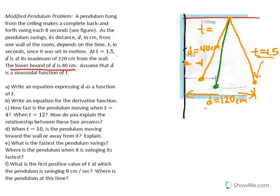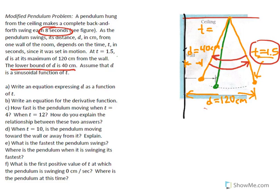How long does it take for the pendulum to make one complete back-and-forth swing? A back-and-forth swing goes from 120 centimeters to 40 centimeters and back to 120 centimeters. It takes 8 seconds for a complete back-and-forth swing, so the period of our sinusoidal function will be 8 seconds. We are going to assume that the distance from the wall is a sinusoidal function of time.